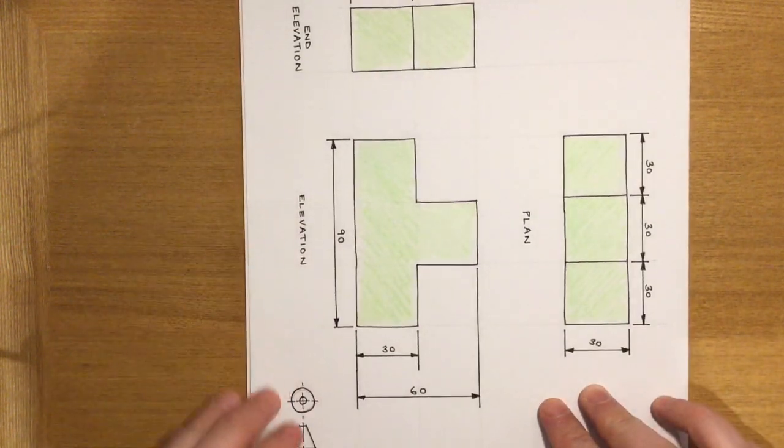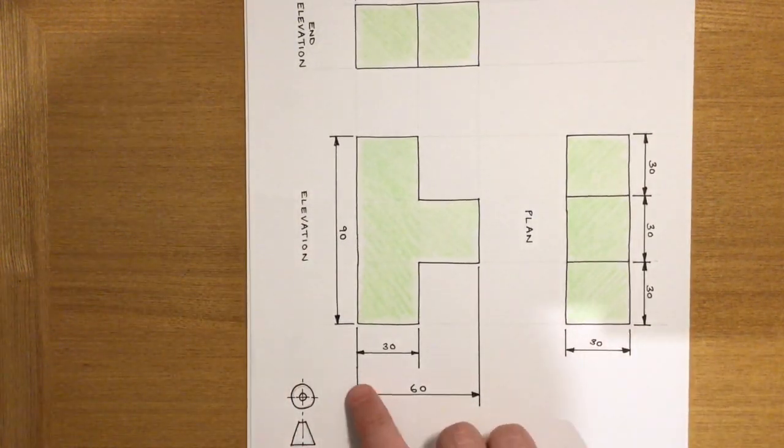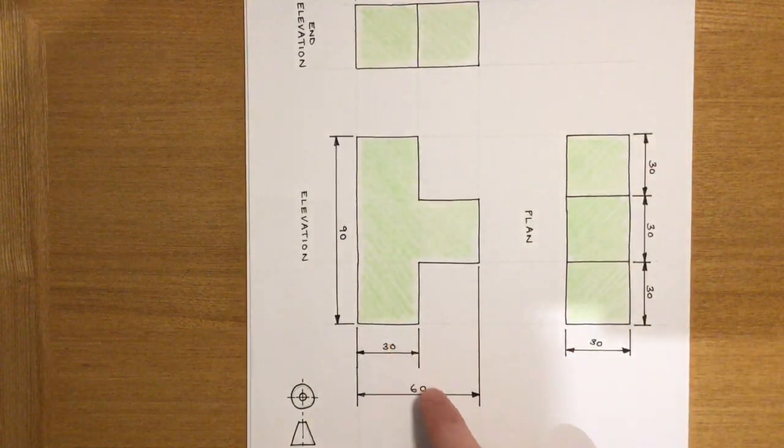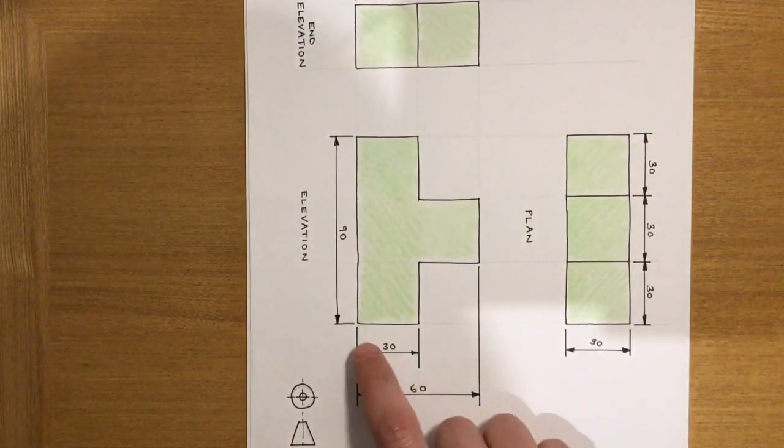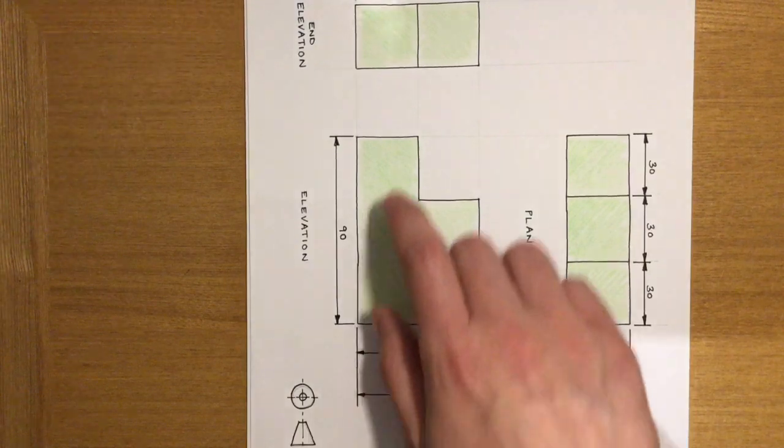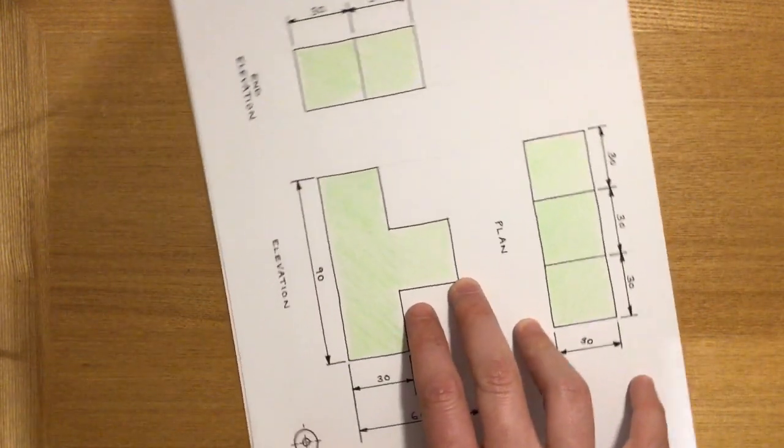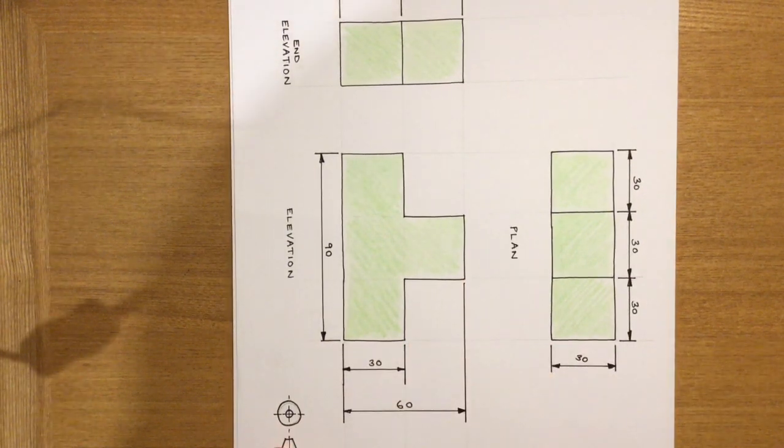And what you'll see now is that all dimensions that sit horizontal, those numbers all sit on top of the line. So whenever you're doing vertical dimensions it can help to turn your page round from being horizontal, turning it that 90 degree angle and then adding in those dimensions.